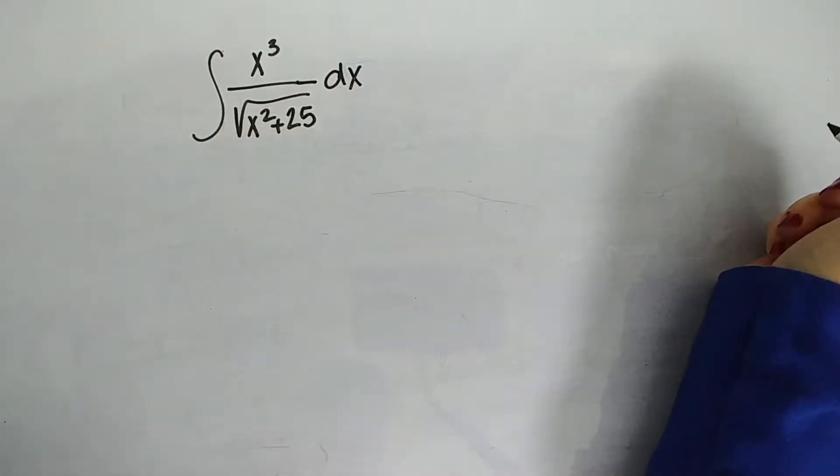Hey there, welcome to another edition of Solve My Math Homework. So today we've got an ugly indefinite integral. We have the indefinite integral of x cubed over the square root of x squared plus 25.